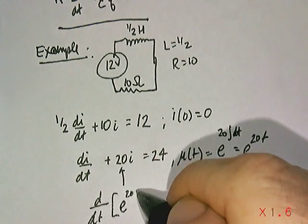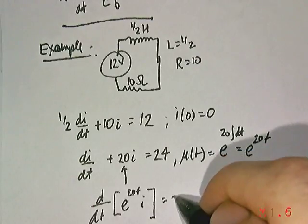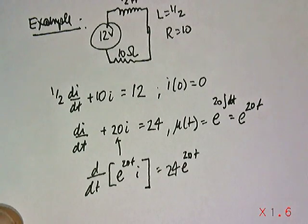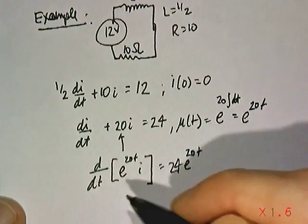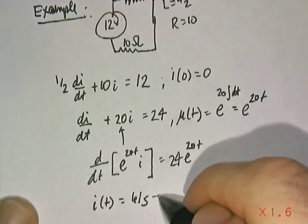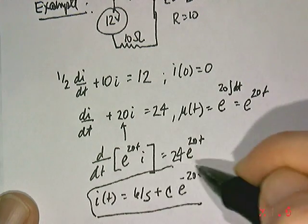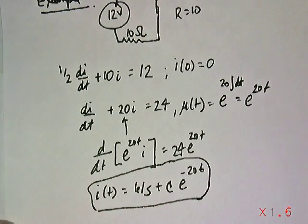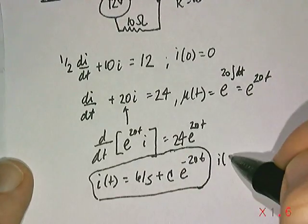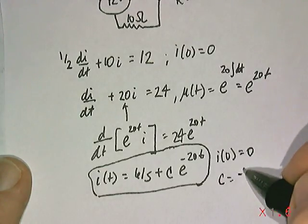Basically this will turn out to be, the left-hand side would be your integrating factor times the solution, or in this case the response I, will end up being 24 times e times that integrating factor e to 20T. Ultimately, you can show with some reduction that the current function I(t) would be 6/5 plus C, the integration constant, e to the minus 20T. And then now use the fact that the current initially is zero. If you do that, that will force the constant to be negative 6 over 5.